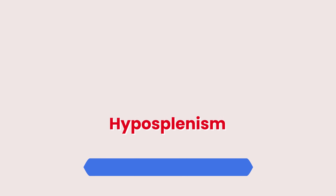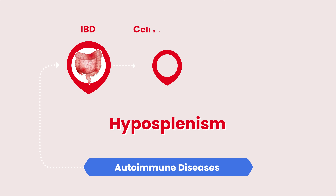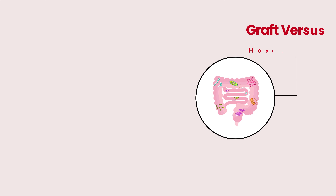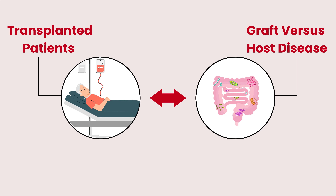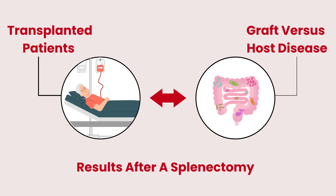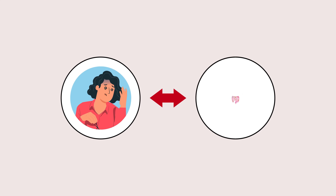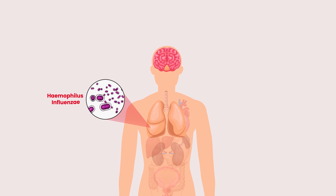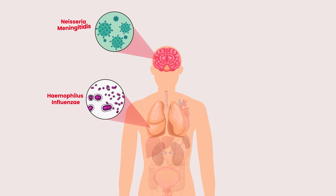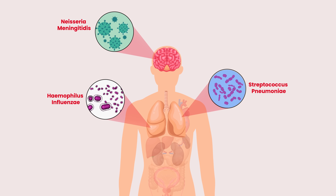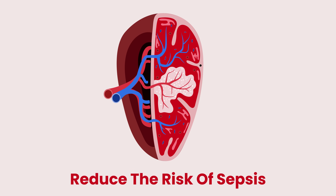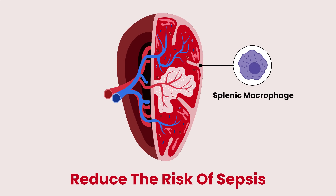Hyposplenism, on the other hand, is often related to autoimmune diseases such as IBD, celiac disease, and rheumatoid arthritis, sometimes occurs in graft-versus-host disease in transplanted patients, or results after a splenectomy. Hyposplenic patients require vaccinations against encapsulated organisms such as Haemophilus influenzae, Neisseria meningitidis, and Streptococcus pneumoniae. This helps reduce the risk of overwhelming sepsis that can occur from impaired splenic macrophage function.